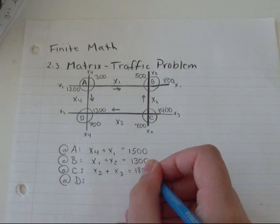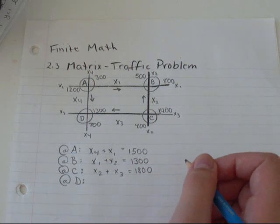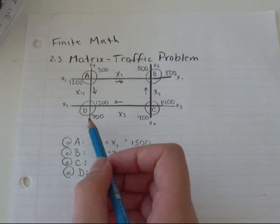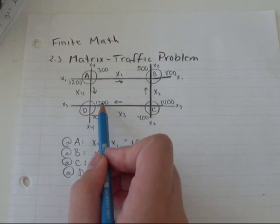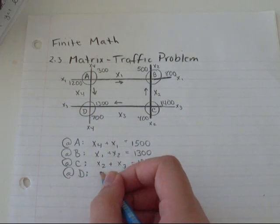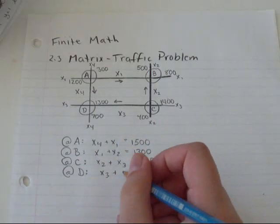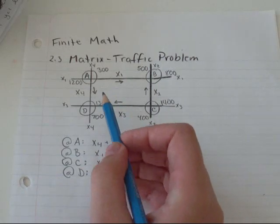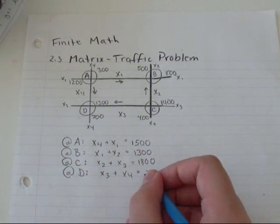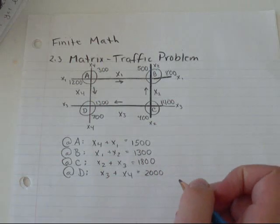And then at D I've got cars coming this way through X3 and going this way down X4. So that's 1300 and 1700, that's 2000 cars in that intersection.